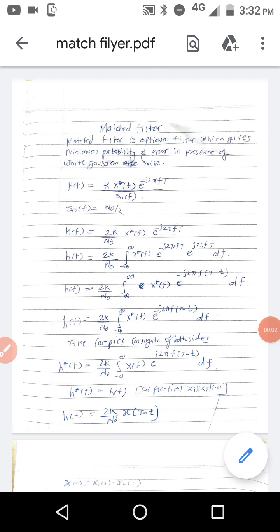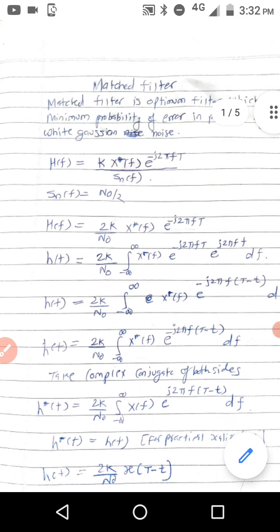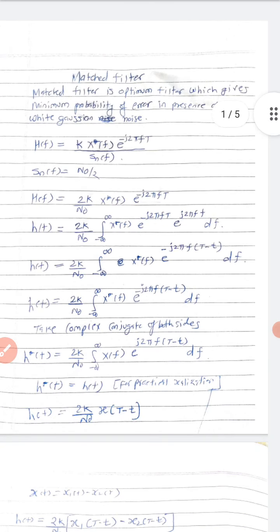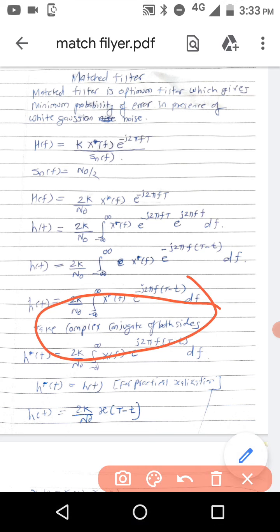In this video we will learn about the matched filter and its properties. In objective exams, most or maximum objective questions come from this part because the portion is such that it gives maximum number of objective questions. A matched filter is an optimum filter which gives minimum probability of error, with the condition that the noise is additive Gaussian noise.